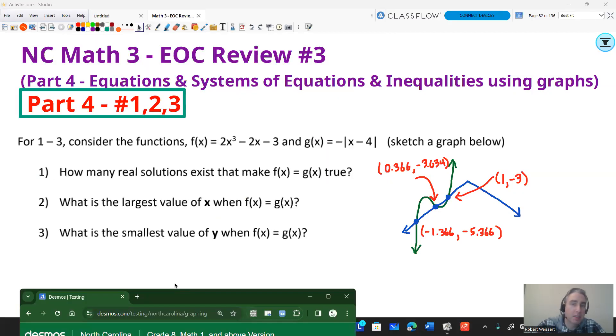It says, how many real solutions exist that make f(x) equal g(x) to be true? And what they're really saying is, if I were to do 2x³ - 2x - 3 equals negative absolute value of x minus 4, how many values of x make that equation true? And while I have one, two, three values there, so the answer is going to be three real solutions.